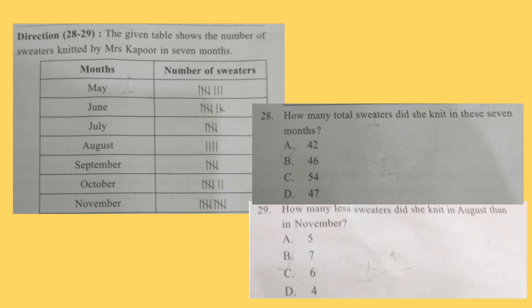Now for 28 and 29, the given table shows the number of sweaters knitted by Mrs. Kapoor in seven months. Question 28: How many total sweaters did she knit in these seven months? You have to add all the numbers. Correct answer is option B, 46.